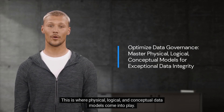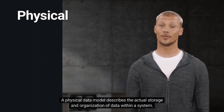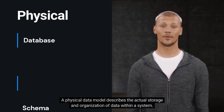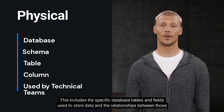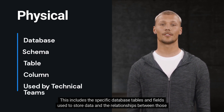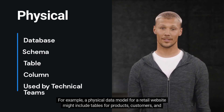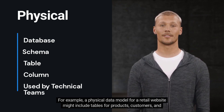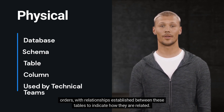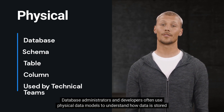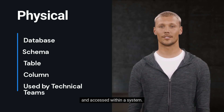This is where physical, logical, and conceptual data models come into play. A physical data model describes the actual storage and organization of data within a system. This includes the specific database tables and fields used to store data and the relationships between those tables. For example, a physical data model for a retail website might include tables for products, customers, and orders, with relationships established between these tables to indicate how they are related.